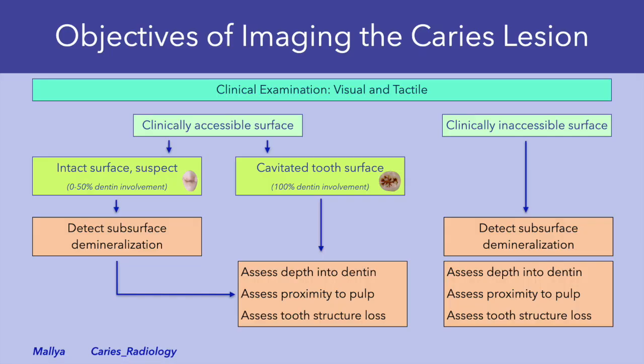How does imaging fit into caries detection? Most importantly, the information from imaging should supplement your clinical information and is not a substitute for a thorough clinical examination. When your clinical examination does not identify any cavitated lesions, imaging could help detect subsurface demineralization. And in the presence of frank cavitation, imaging allows us to assess the depth into dentin, the proximity of the caries to the pulp, and an overall assessment of the restorability of the tooth.